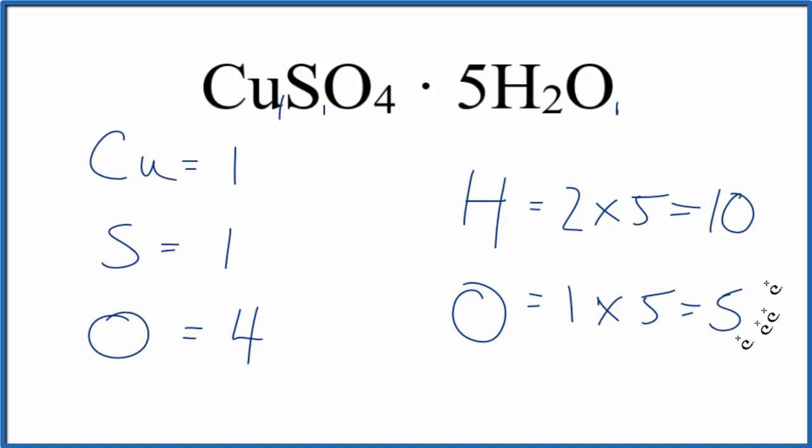And if we add all of these numbers up to find the number of atoms in this copper sulfate pentahydrate, we'd have 15, 16, 17, plus four. We'd have a total of 21 atoms in CuSO4·5H2O, copper sulfate pentahydrate.